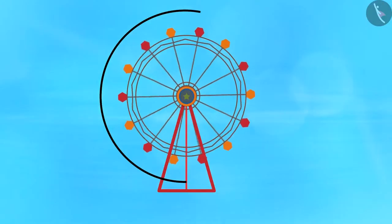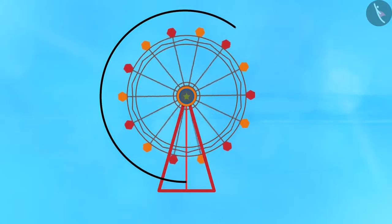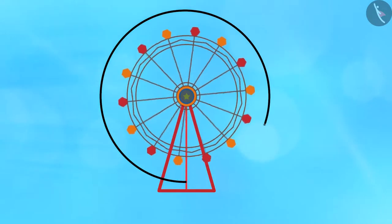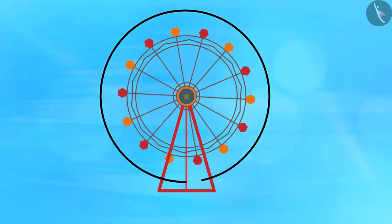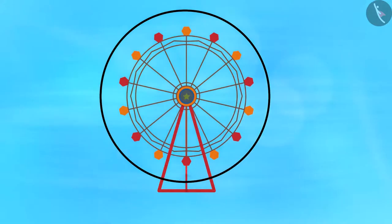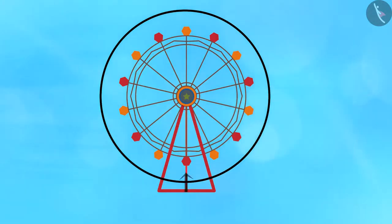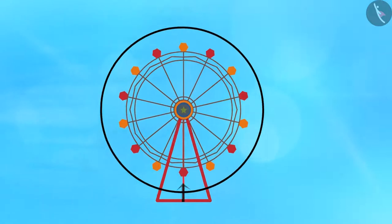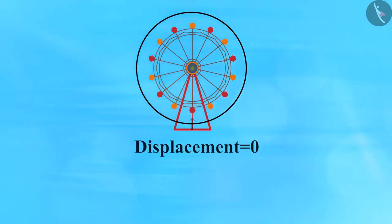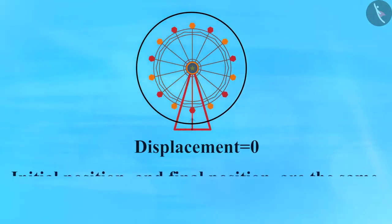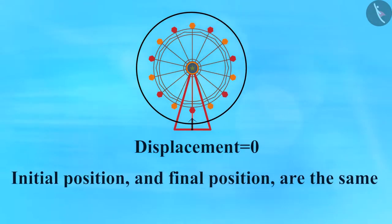The wheel starts rotating again, and when it finally stops, you are back at the bottom. Here, displacement is equal to zero since your initial position and final position are the same.